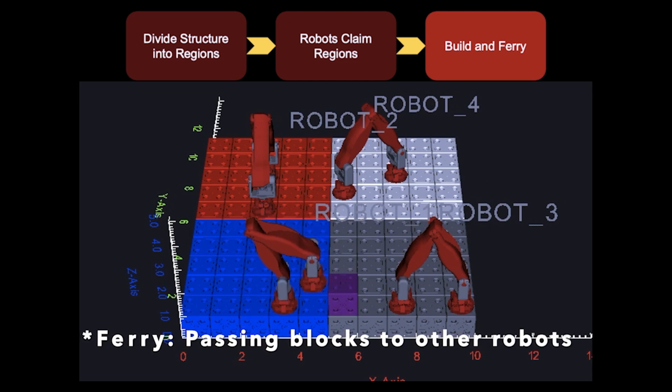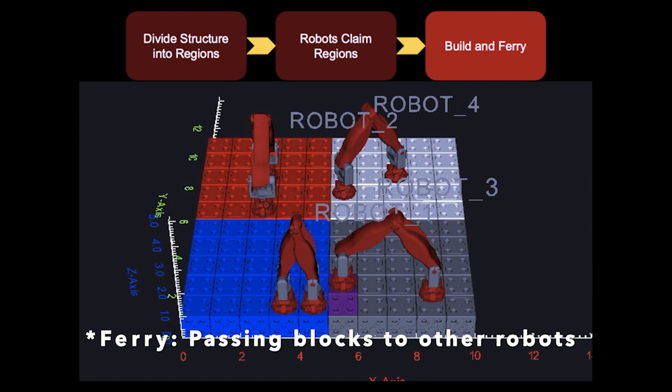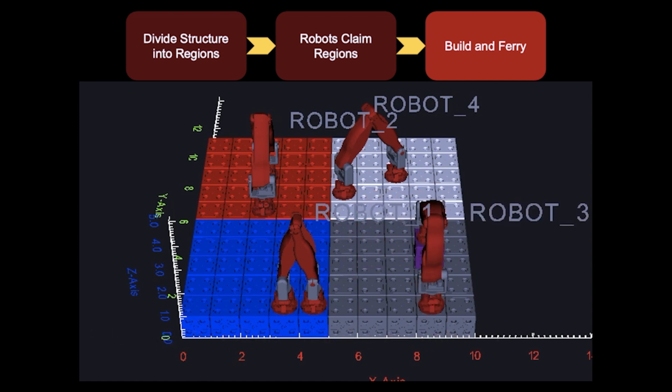If a robot receives a block in an area that has not been built, it will build that region. Otherwise, it will pass the block, or ferry, to other robots.